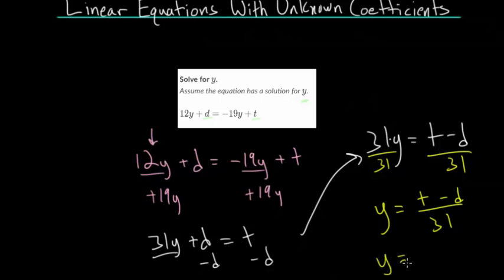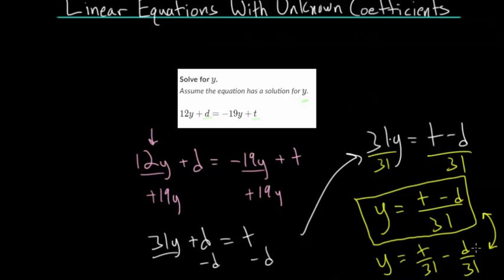If you want, you can actually divide the 31 into both of those. So you have t over 31 minus d over 31. Either way you want to write it. This way is slightly more compact, which is why I like it better. But it is good habit to be able to know how to go back and forth between these two different ways of writing it. Recognizing that the 31 divides into both terms in this numerator, you can't just divide it into one, it has to go into both.